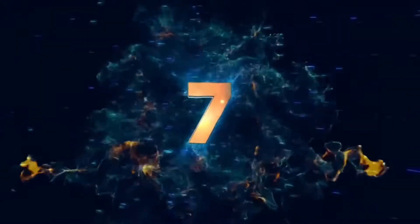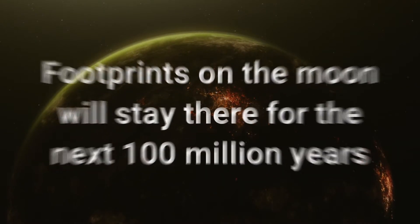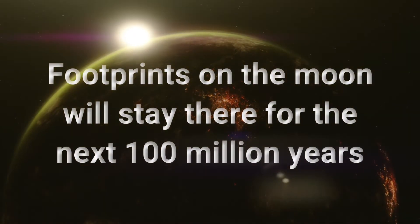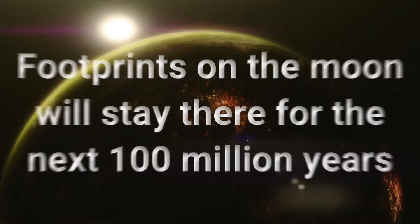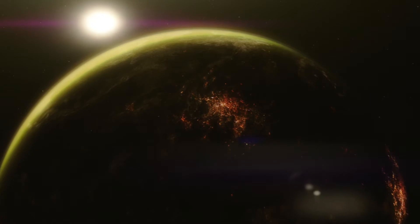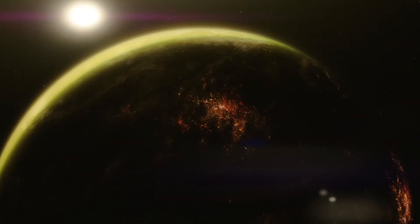Number 7: Footprints on the Moon Will Stay There For The Next 100 Million Years. When we go to the beach and take a walk in the sand, we leave our footprints. However, they don't stay around for long. After a little time, they will disappear.